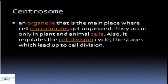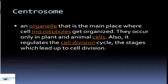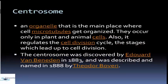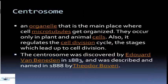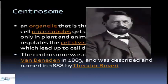Centrosome is actually an organelle that is the main place where cell microtubules get organized. They occur only in plant and animal cells. It also regulates the cell division cycle and the stages which lead up to cell division. Centrosome was discovered by Edward Van Beneden in 1883 and was described and named in 1888 by Chiodoro Biveri.